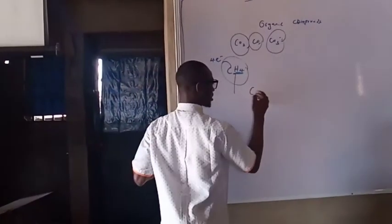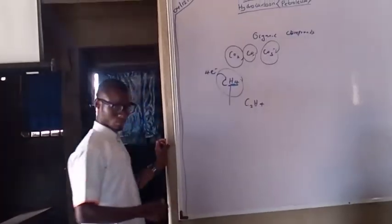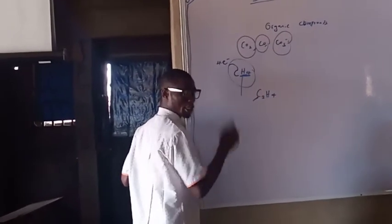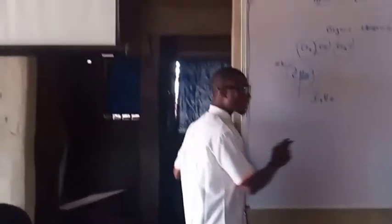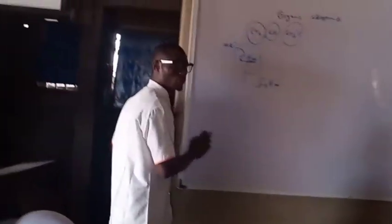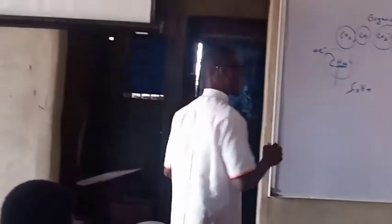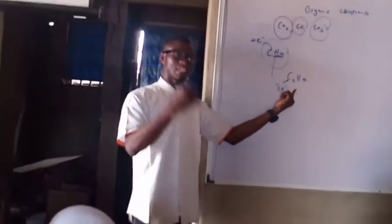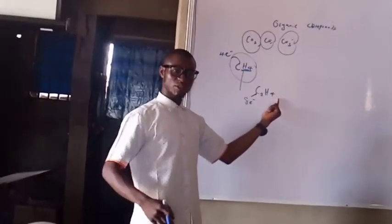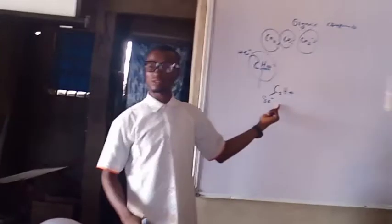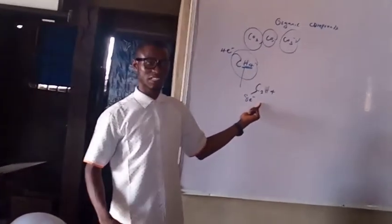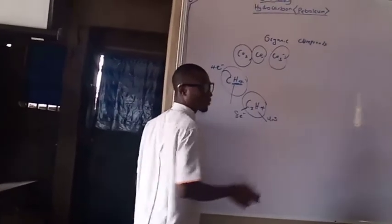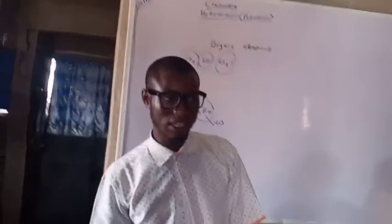But when you now have something like C2H4, we have two carbon atoms. Each has four valence electrons. So when we have two carbon atoms, how many valence electrons do we have altogether? We have eight valence electrons. When we now have four hydrogen atoms, it is not saturated. That is why we call this kind of compound an unsaturated hydrocarbon.